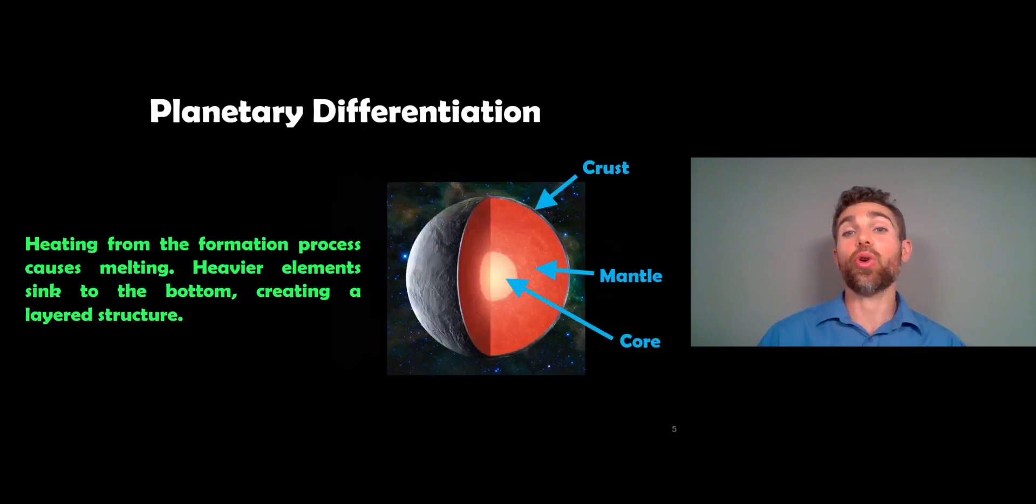Now something that all of the terrestrial planets show evidence of, and actually planets in general will show evidence of, is planetary differentiation. And what does that mean? Well it means they have a layered structure. So during the formation process they heat up, there's melting internally, and because of that the heavier elements will essentially sink to the bottom to the center of the planet. So you get your heavier stuff there like your iron core, and then you get lighter and lighter stuff as you get to the crust. So it's a little more complex than that, but basically that's what planetary differentiation means. You have this different layering of the materials inside the planet.